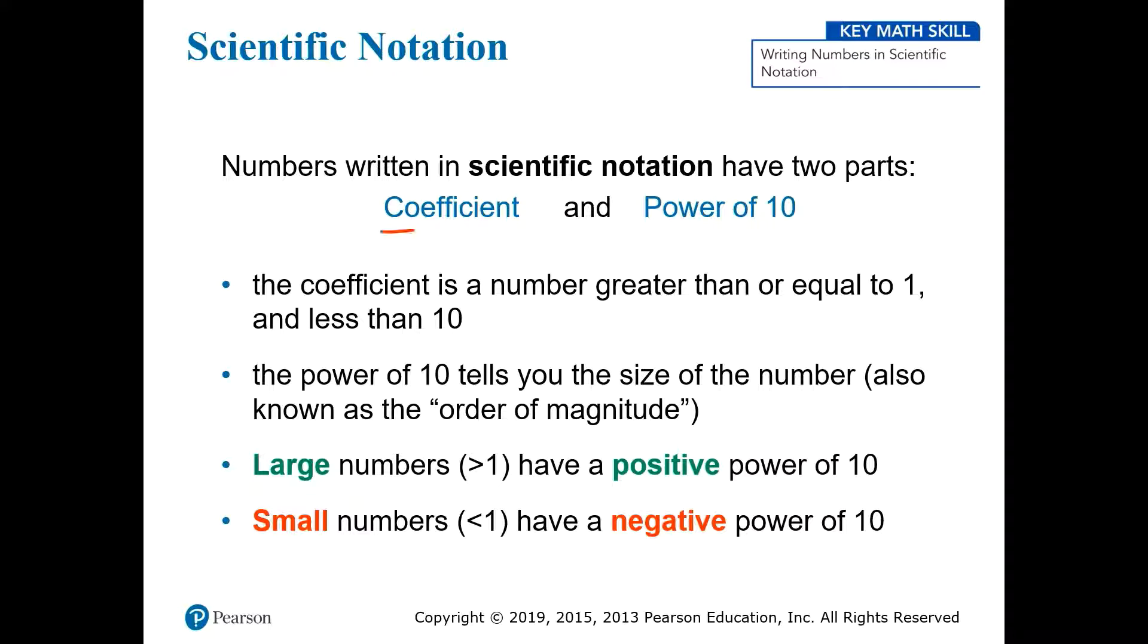First, you have the coefficient, which looks like a standard number between 1 and 10. This part captures the precision of the number, which we'll talk more about later. The second part is a power of 10, sometimes known as the order of magnitude, which tells you the approximate size of the number.